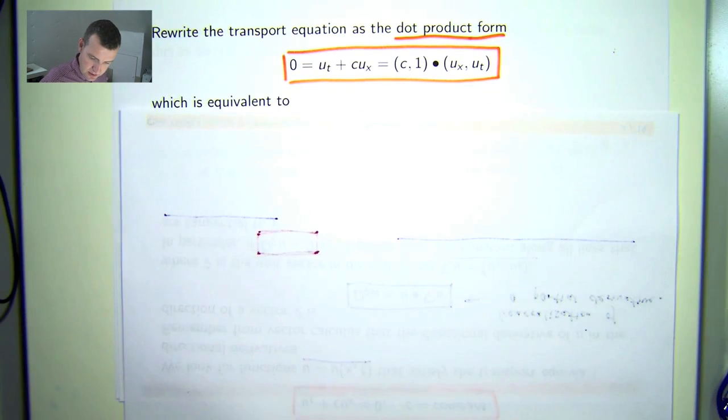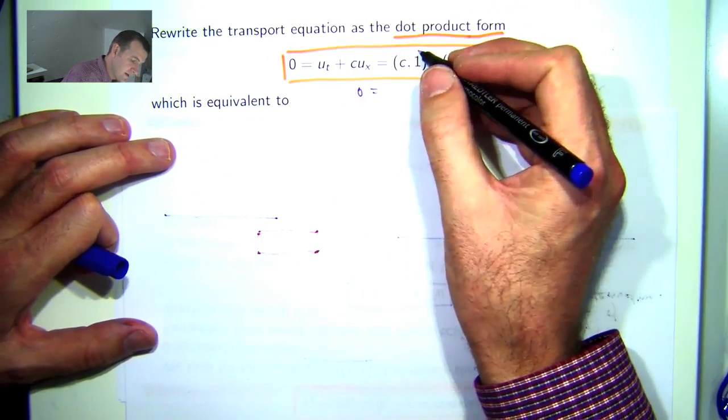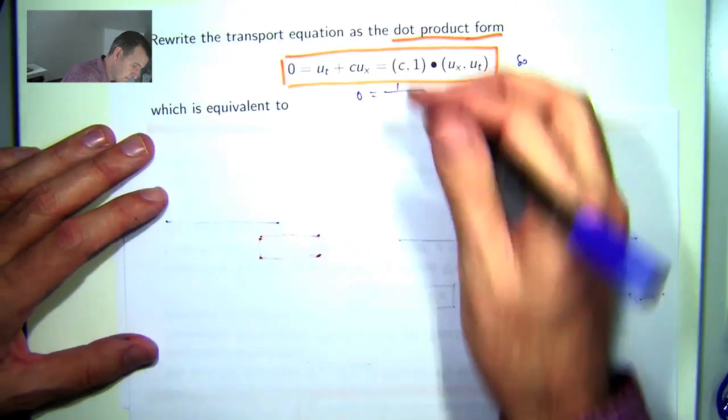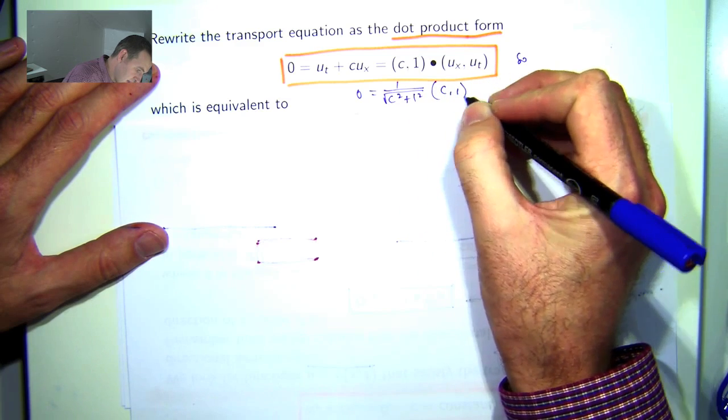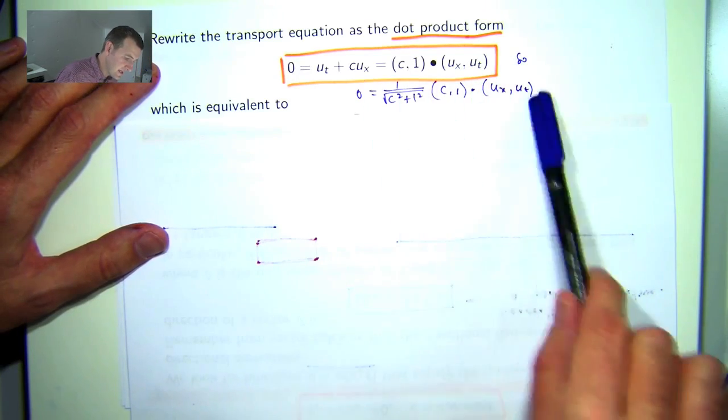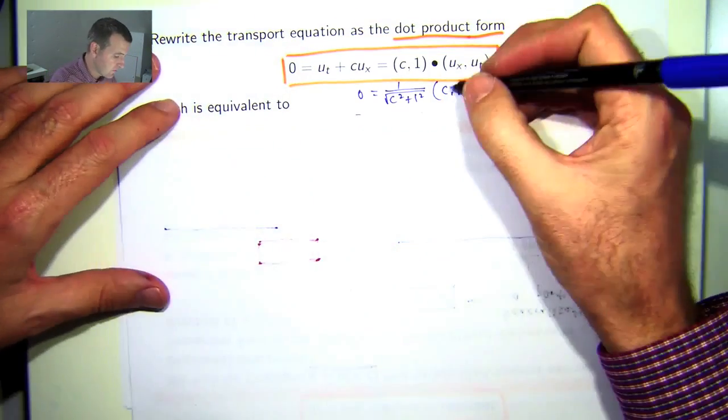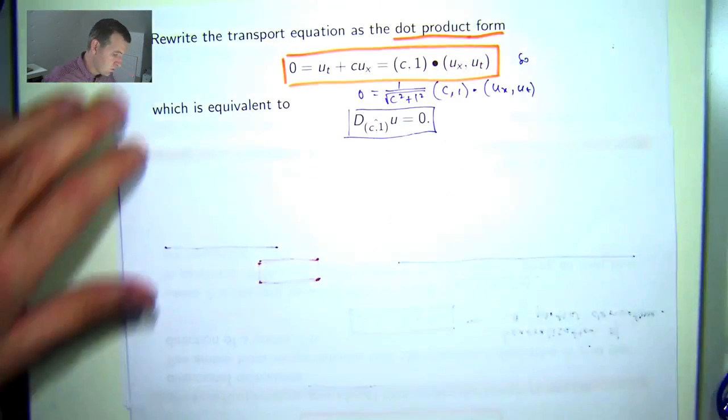So how can we put that in? Well, I can just multiply both sides by one divided by the length of this vector c comma one. And I'm not changing it at all. So the length of a vector c comma one is just this. This is the gradient. So this is now the directional derivative of u in the direction of the vector c comma one. And we know that the directional derivative is zero.